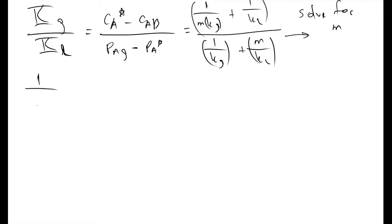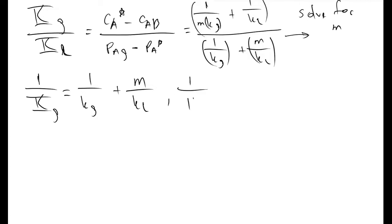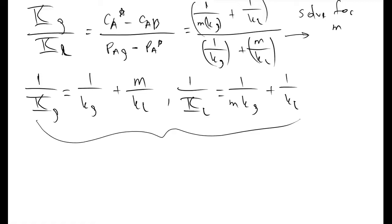This is a textbook relationship: 1 over big KG equals 1 over the local gas phase mass transfer coefficient plus m over the local liquid phase mass transfer coefficient, which must also equal 1 over m times the local gas mass transfer coefficient plus 1 over KL. Once we evaluate these two equations, we solve for the global mass transfer coefficients.